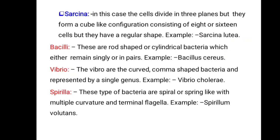The next type is Sarcina. In sarcina, cells divide in three planes and form a cube-like configuration consisting of eight or sixteen cells with a regular shape — example: Sarcina lutea. In bacillus, these are rod-shaped cylindrical bacteria which remain singly or in pairs — example: Bacillus cereus. In vibrio, these are curved comma-shaped bacteria represented by a single genus — example: Vibrio cholerae. In spirilla, these bacteria are spiral or spring-like with multiple curved edges and terminal flagella — example: Spirillum volutans.